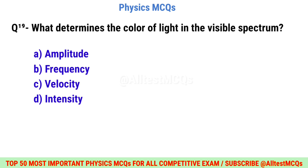Question number nineteen: What determines the color of light in the visible spectrum? Correct option is B: Frequency.